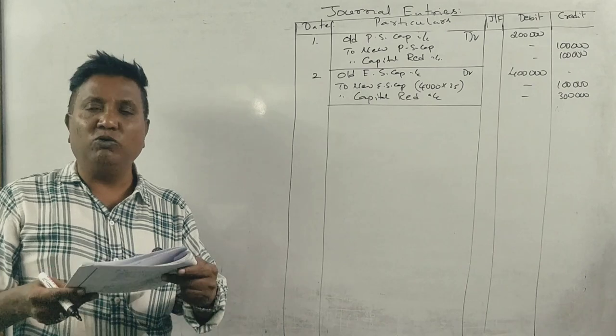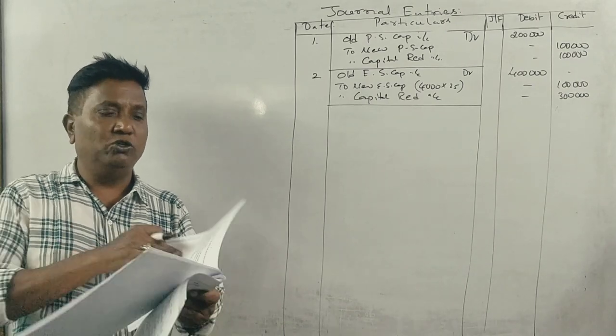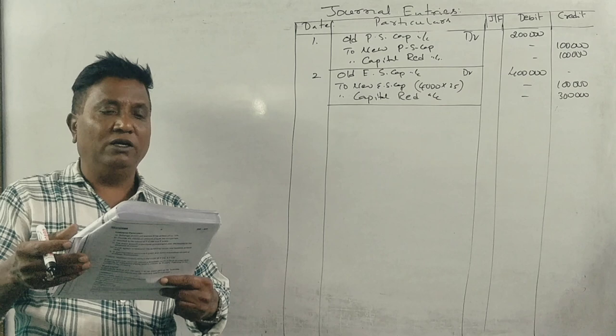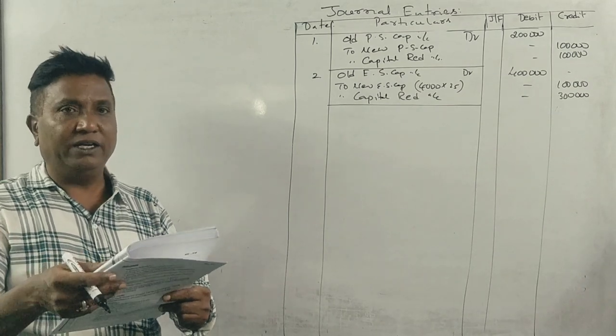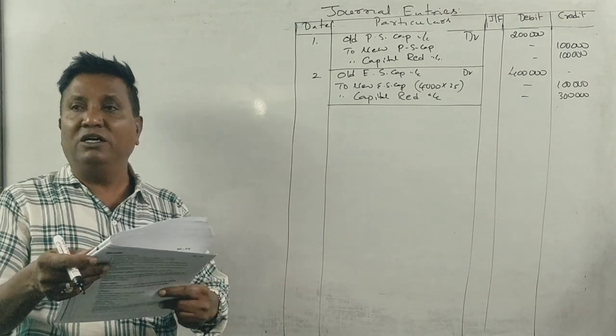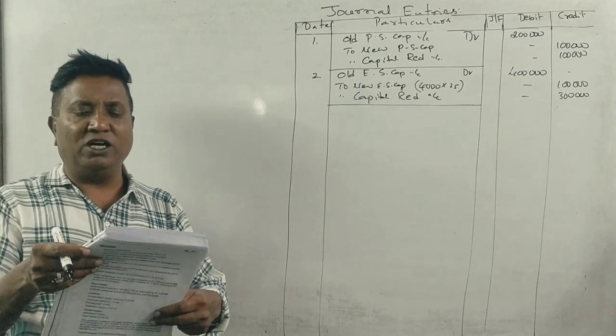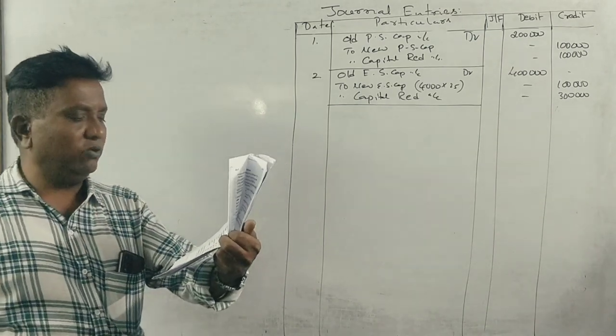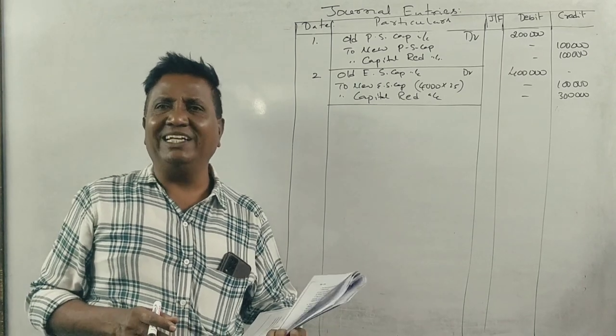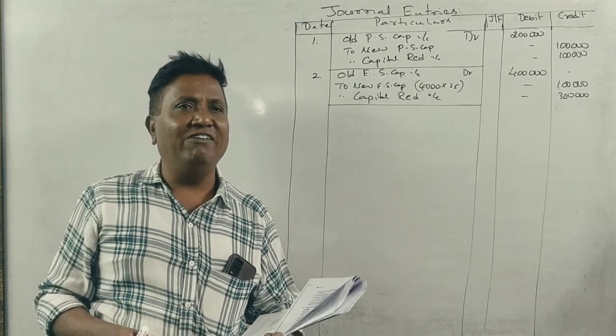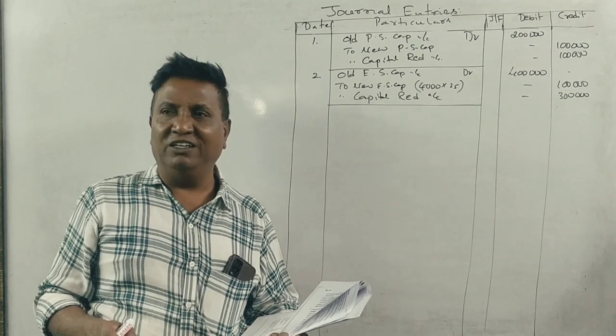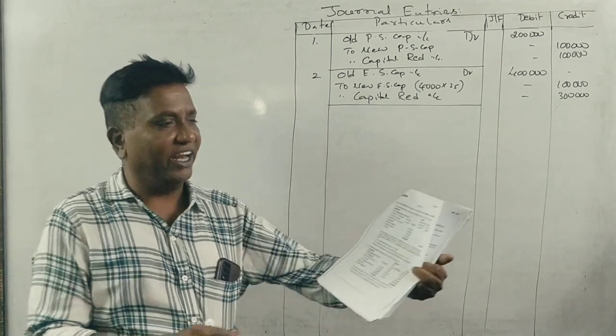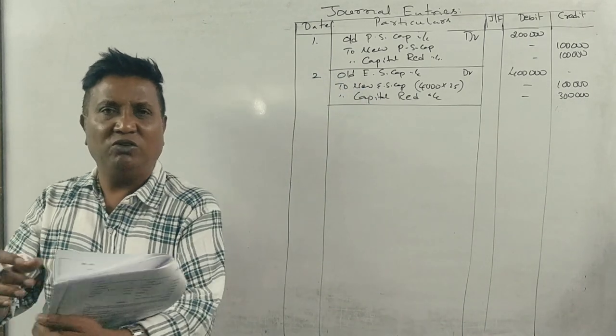Third adjustment: 8% debenture holders to take over stock and debtors in full satisfaction of their claim. Debentures are 1 lakh. They take stock and debtors.